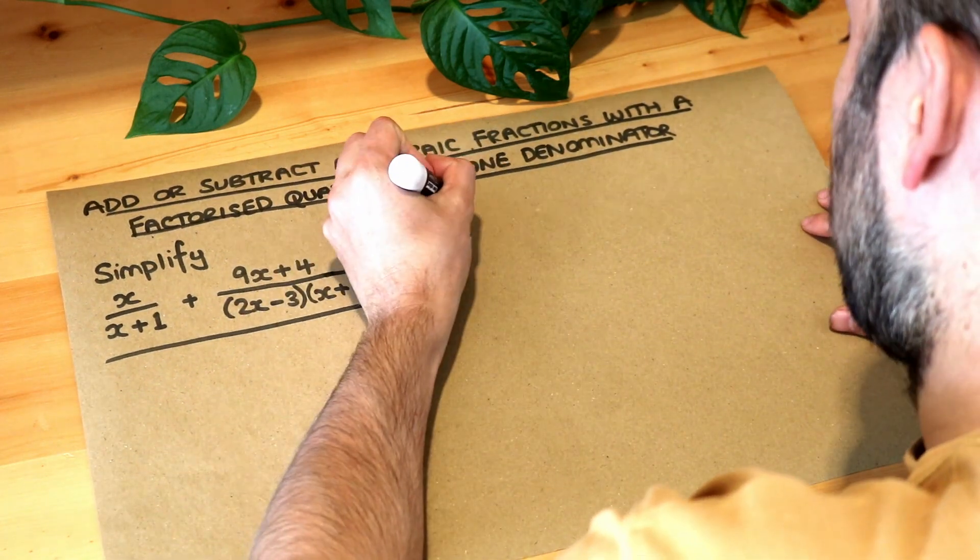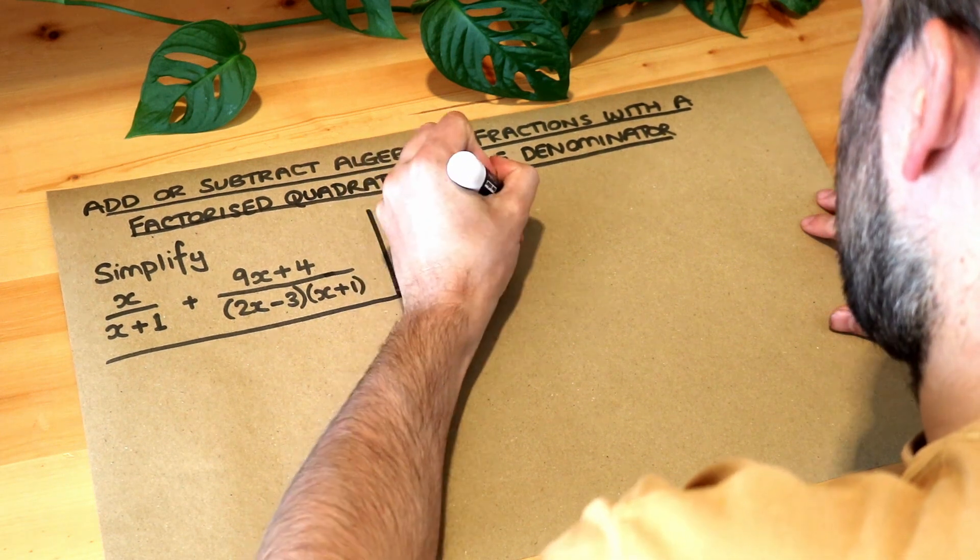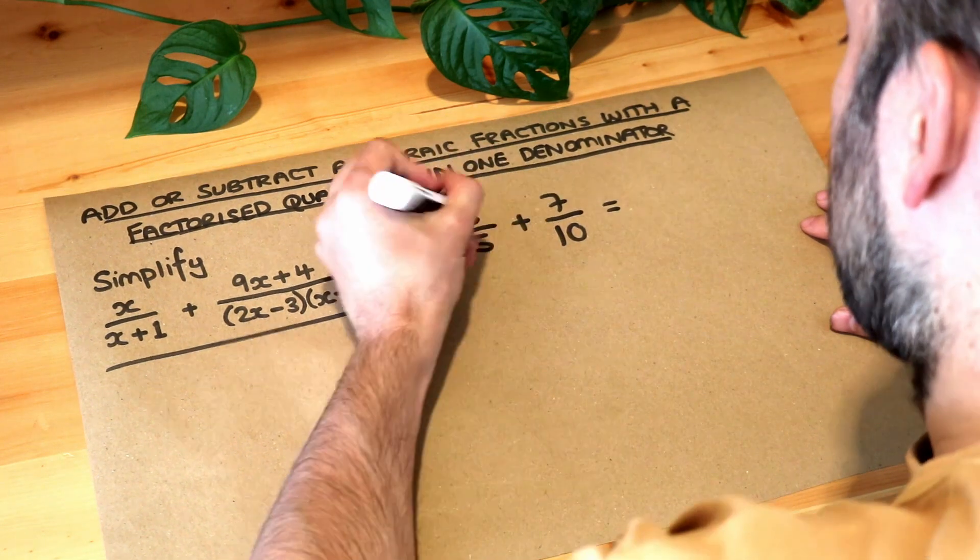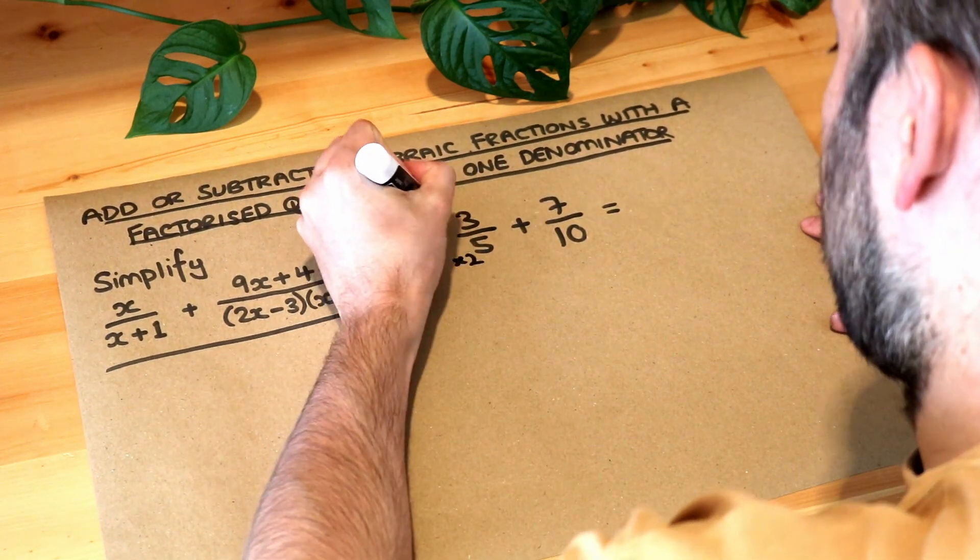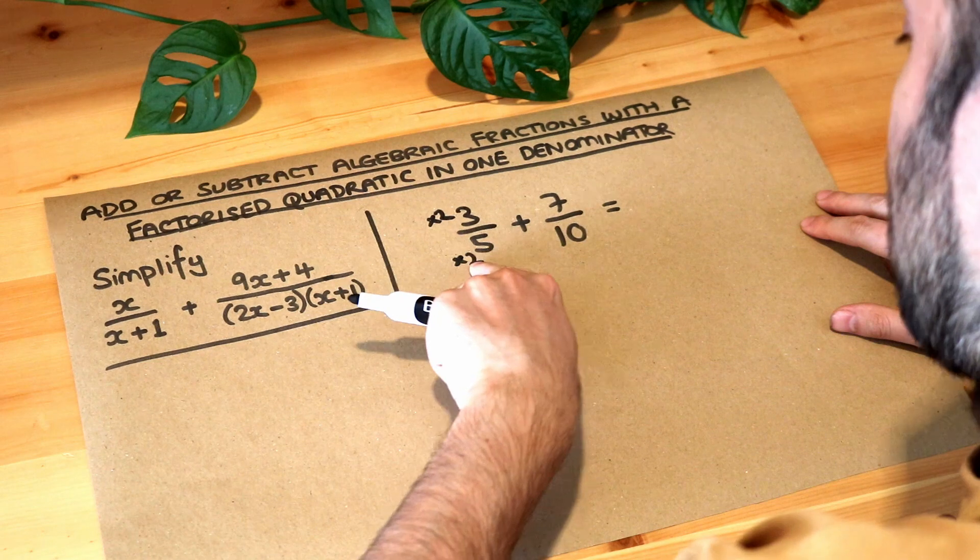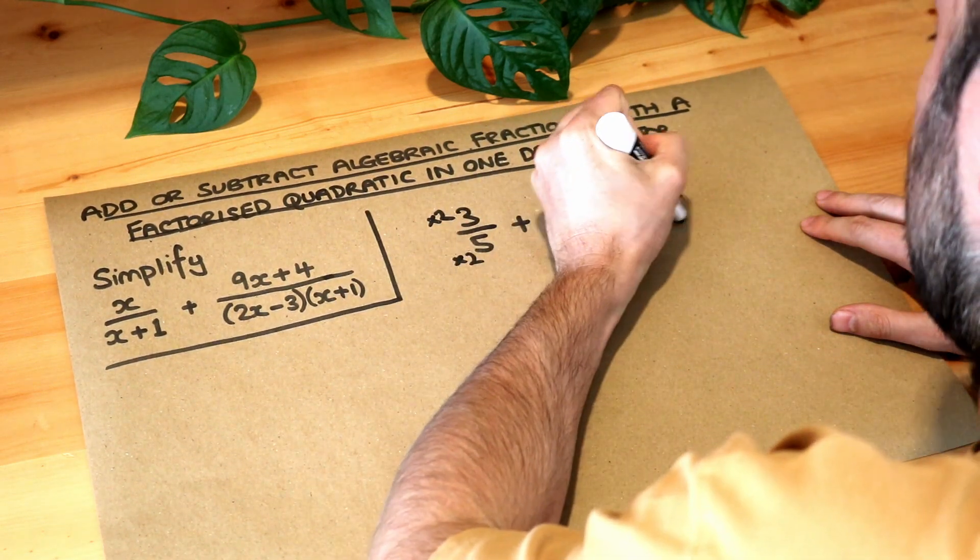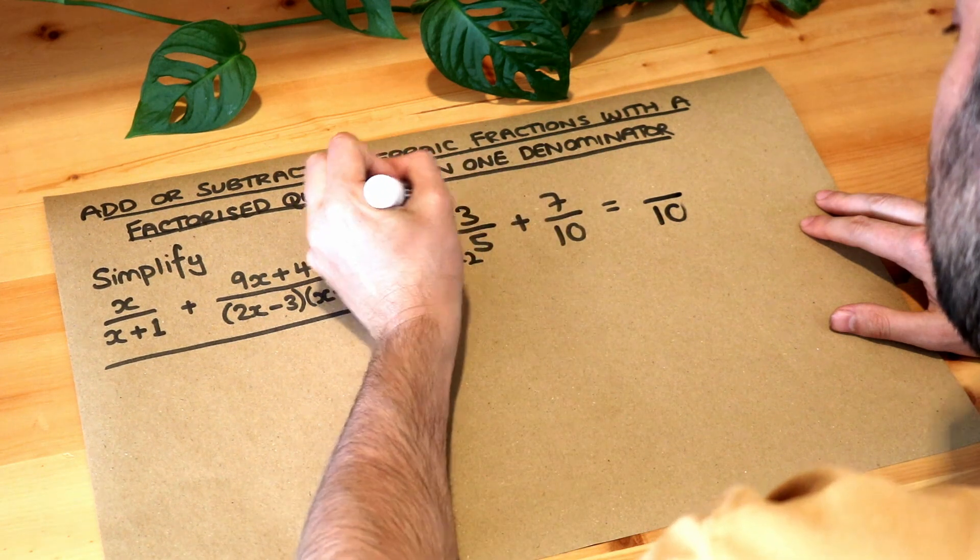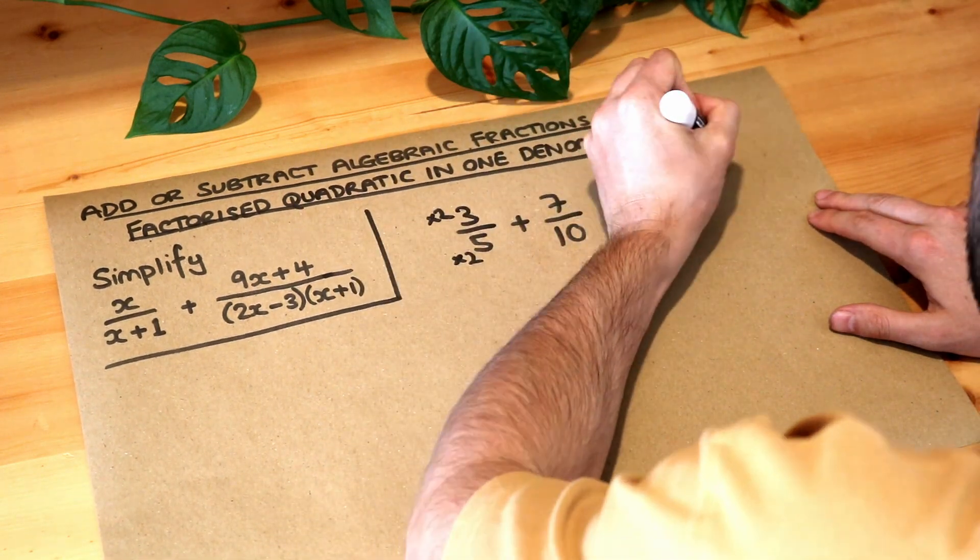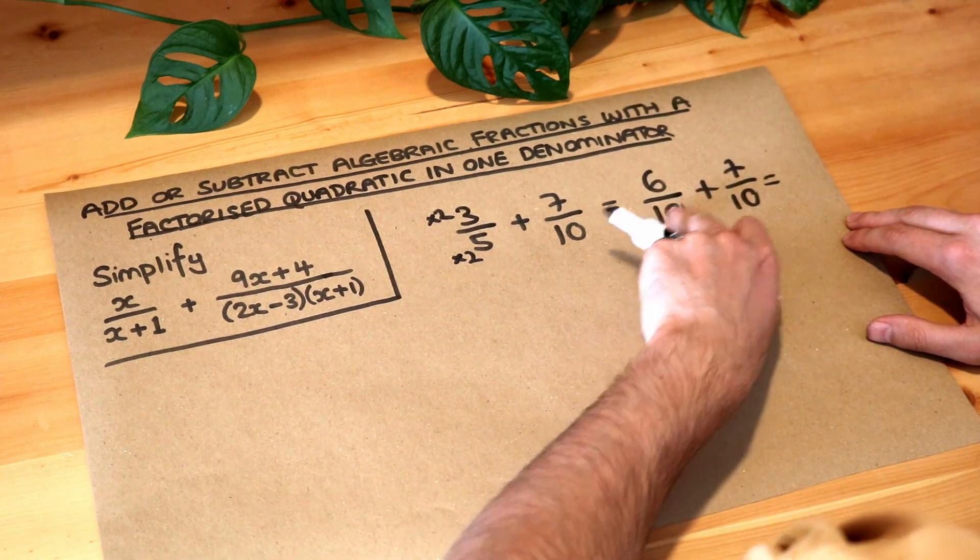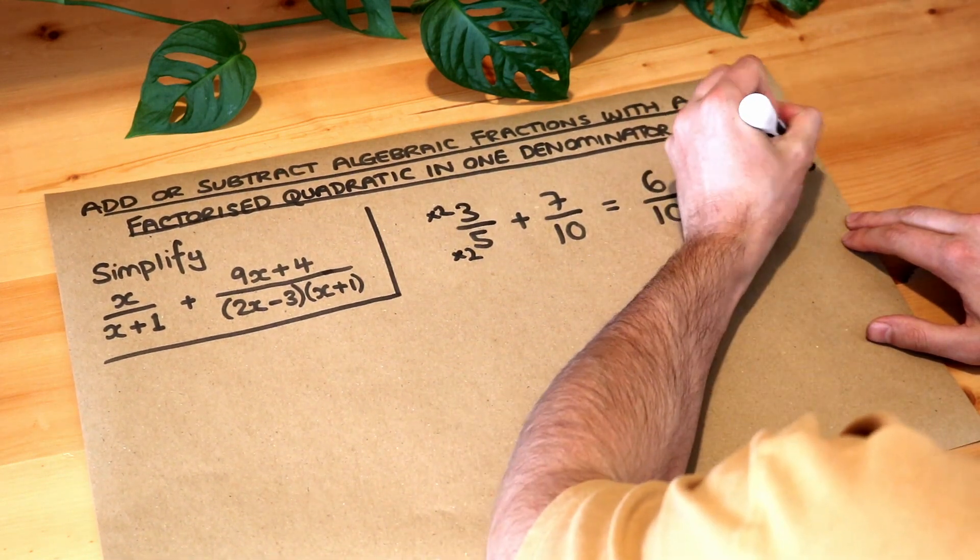If I had, for example, 3 over 5 plus 7 over 10 then what we could do is multiply top and bottom of that fraction by 2 because then that 5 times by 2 becomes 10 and you'll have the same denominator. So the 5 becomes 10, the 3 times 2 is 6 and then because we've got the same denominator now they're both 10, 6 tenths plus 7 tenths is 13 tenths.